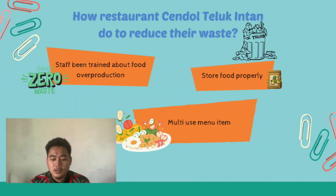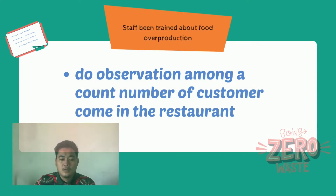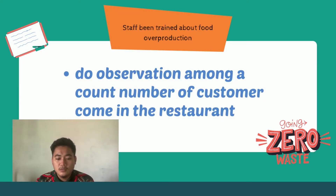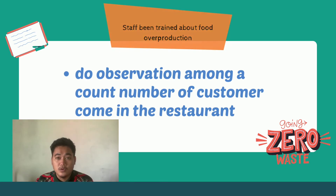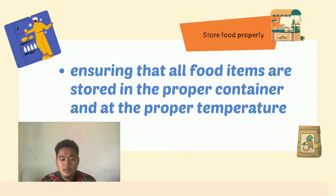Next, how does the restaurant reduce their waste? First, staff are trained on how to control food over-production. They observe and count the number of customers coming in and the quantity of raw materials used before cooking. Second, store food properly — staff ensure that all food items are stored in the proper container and at the proper temperature.